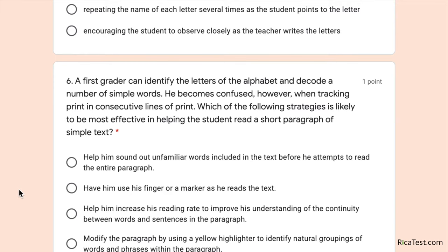Number six: a first grader can identify letters and decode simple words, but becomes confused when tracking print in consecutive lines. Which strategy is most effective for helping the student read a short paragraph? Options include: sounding out unfamiliar words before reading; using a finger or marker while reading; increasing reading rate; or using a yellow highlighter to identify word groupings. Young learners often skip lines when reading paragraphs — teach them to use a finger, marker, or ruler to stay on the correct line. The answer is the second option.